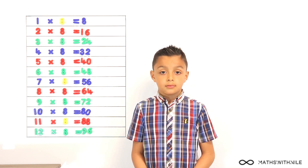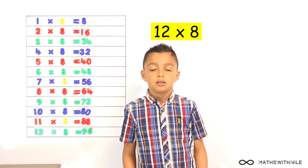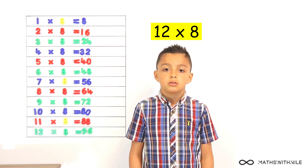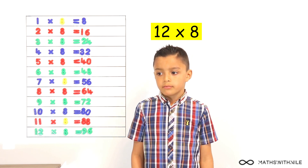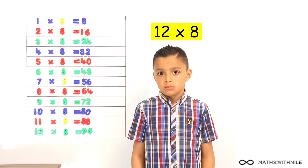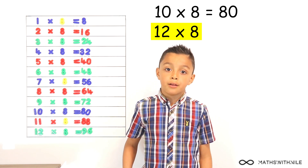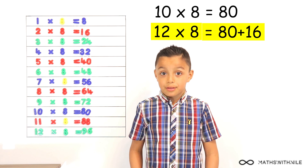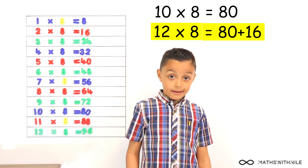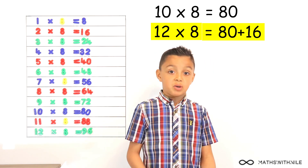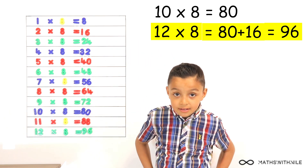Now, how can you work out what 12 times 8 is? Don't look at the board. What can you do? 10 times 8 maybe? 10 times 8 equals 80. And how many lots more? Plus 16. Very good. So 80 plus 10 equals 90, plus 6 equals 96. You've just worked out 12 times 8. Brilliant.